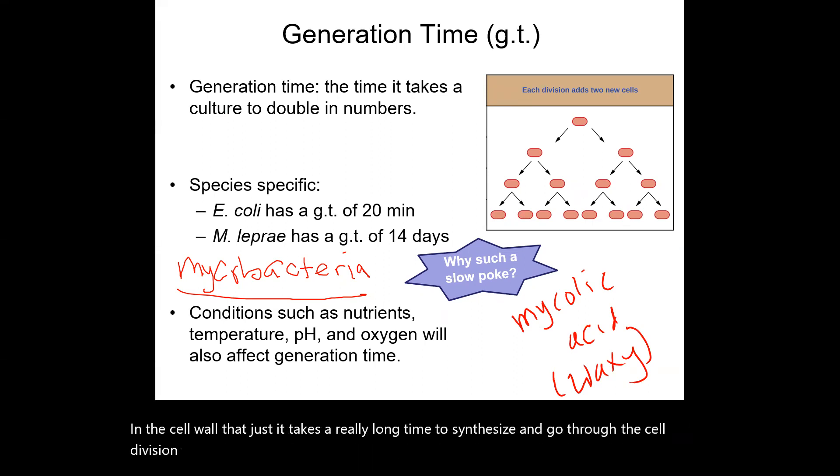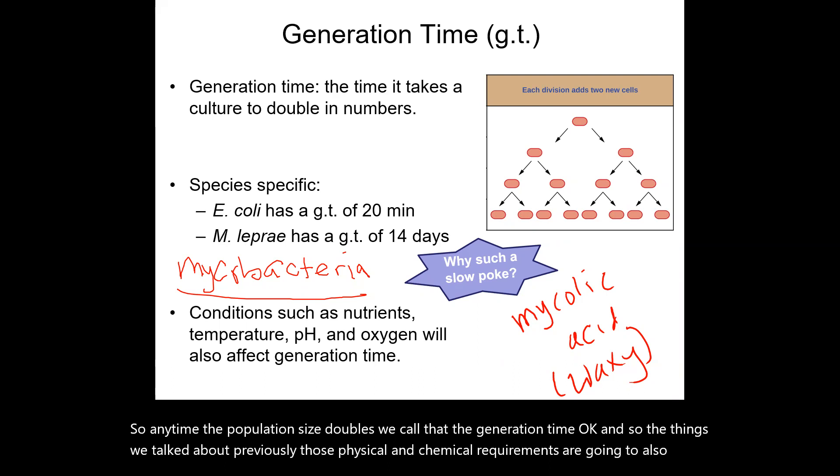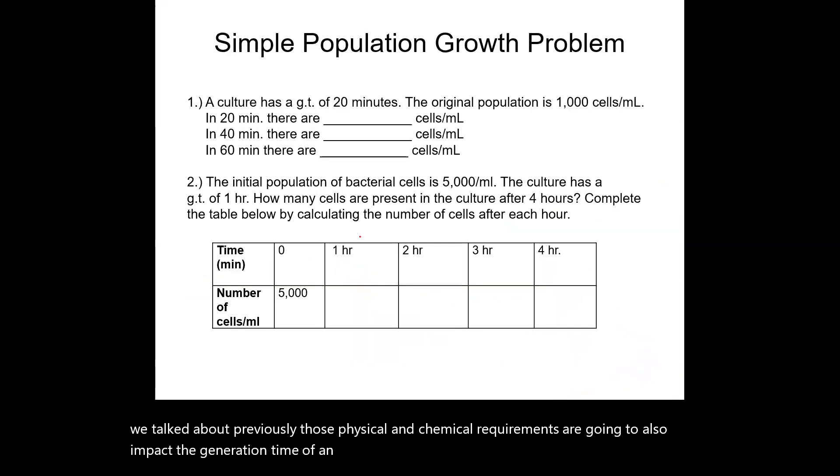So anytime the population size doubles, we call that the generation time. And so the things we talked about previously, those physical and chemical requirements, are going to also impact the generation time of an organism. So let's do a practice problem real quick.